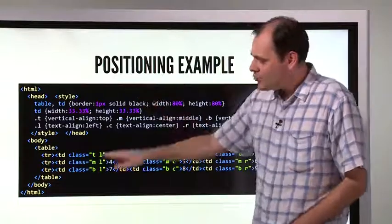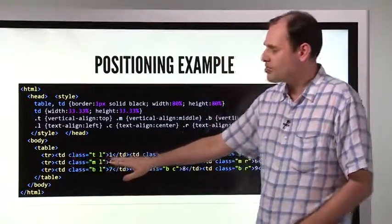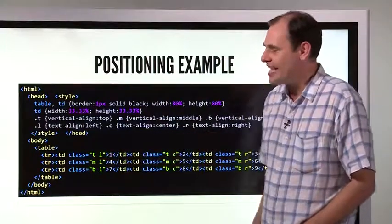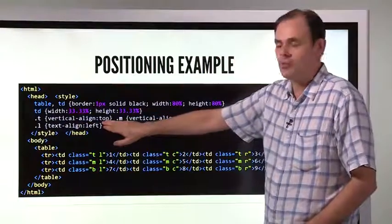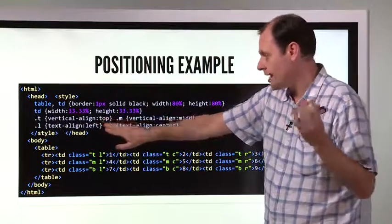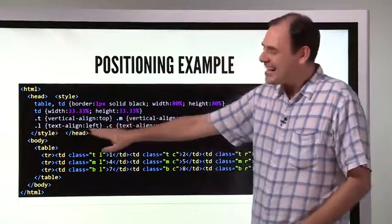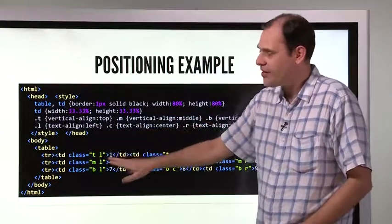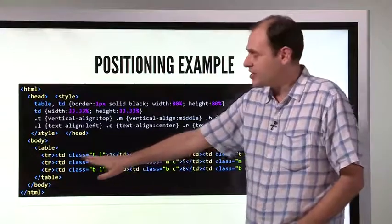And why am I doing that? To illustrate using multiple classes. The top left cell, the top left box, is going to use the T class and the L class. What's the T class? Vertical alignment top. That means all the text goes right up to the top. This one, L. In the x-axis, the text is going to go on the left-hand side. That's just the very first box, right there. Top left. It's going to put the text, whatever the text is. The text is the number one. Nothing very exciting. It's going to put it on the top left.